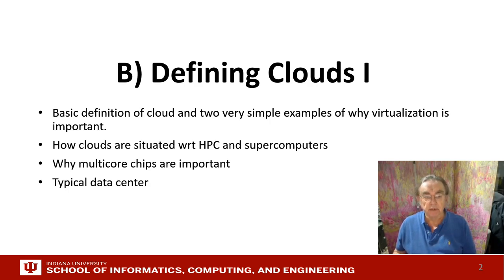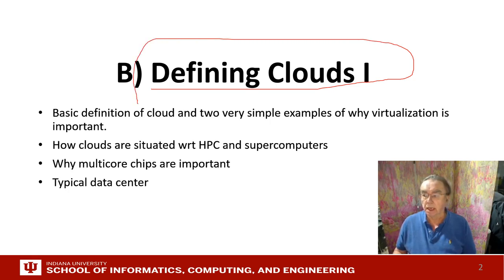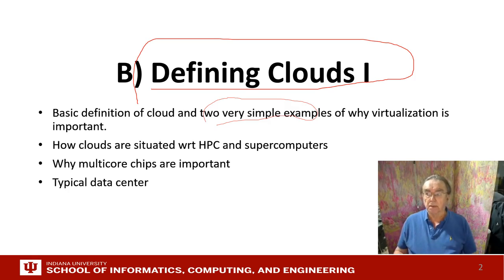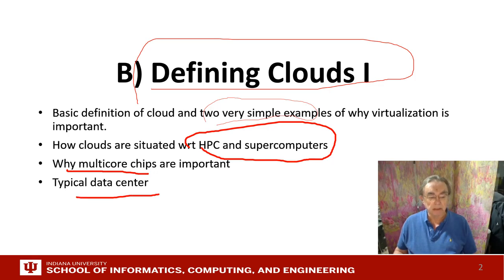Part B is the first real section of the introduction. Part A was a summary of what we were going to do, with some first remarks on what a cloud is. We give basic definitions of the cloud, the things it has to do — elasticity and so on — and a couple of simple examples. We also make some remarks on how clouds are positioned with respect to HPC and supercomputers, note the importance of multi-core, and describe some aspects of a typical data center.